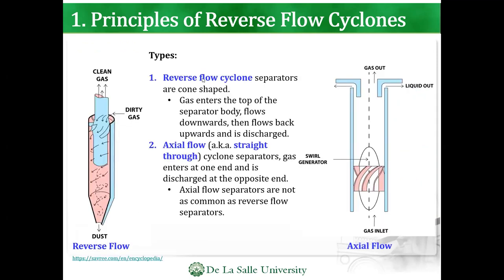There are two types. The reverse flow cyclone, which is the one on the left, and the actual flow straight-through type. In the straight-through type, the gas inlet is at the bottom with a swirl generator, and then the gas goes out directly on top. The most common type is the reverse flow cyclone.